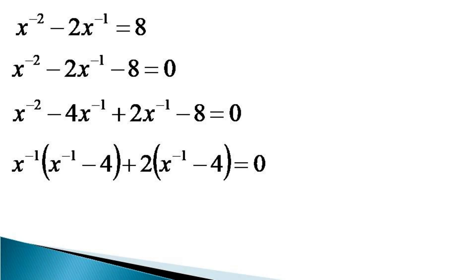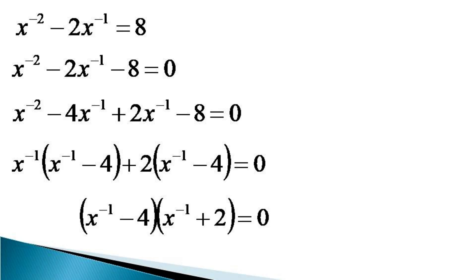Now (x raised to the power minus 1 minus 4) can be taken common from the whole equation to get (x raised to the power minus 1 minus 4) into (x raised to the power minus 1 plus 2) is equal to 0. This equation will give two solutions for the value of x raised to the power minus 1.